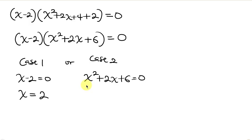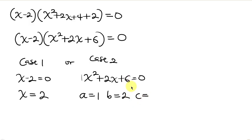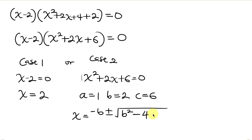For Case 2, we have the quadratic equation x squared plus 2x plus 6 equal to 0. Looking at this quadratic, it cannot be factorized, so we use the quadratic formula: x equals negative b plus or minus the square root of (b squared minus 4ac), all over 2a.